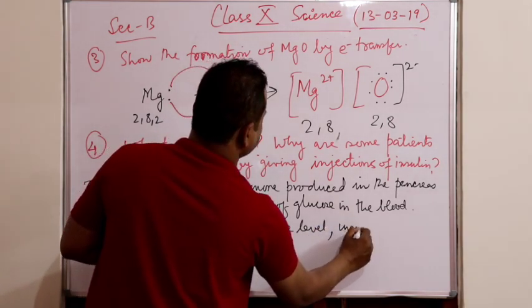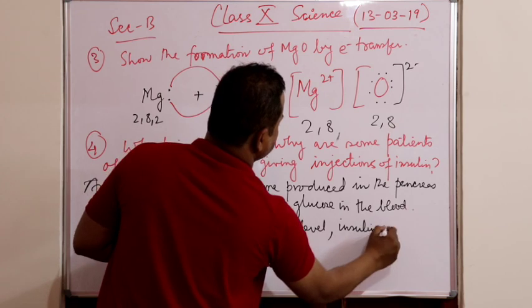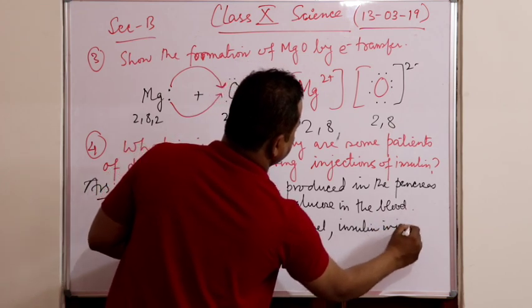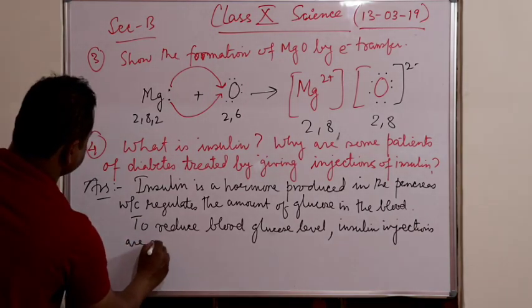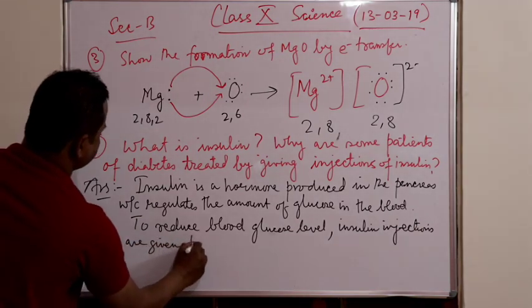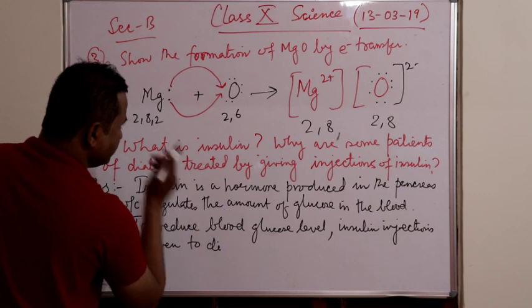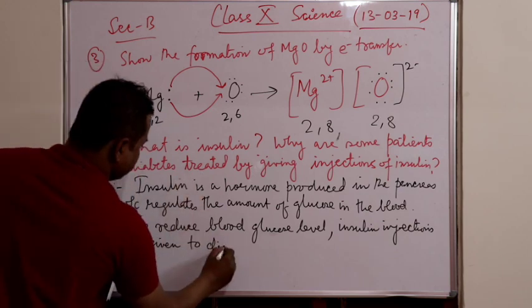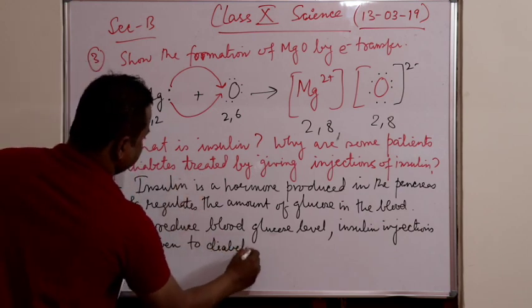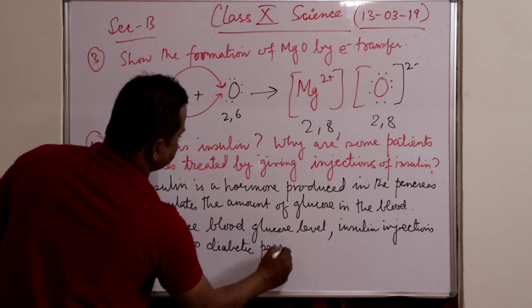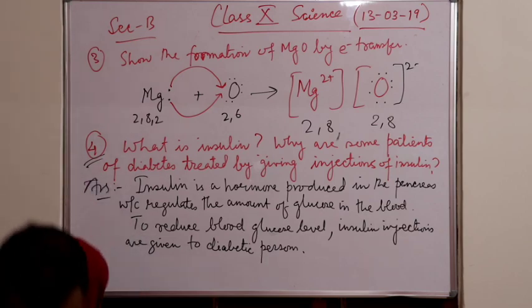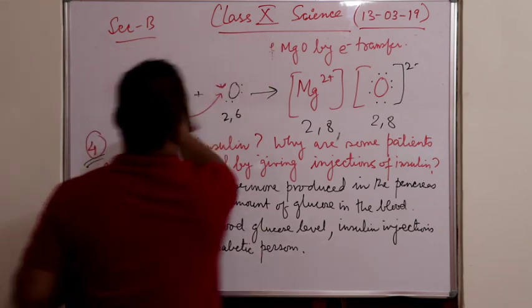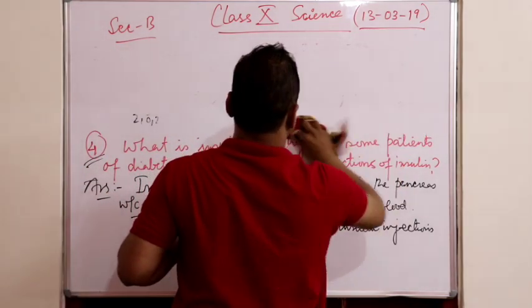The second part: to reduce blood sugar level, that is glucose here, insulin injections are given to diabetic persons. Now this question, question number four, has an OR part. So let's see what is the question and answer of the OR part.